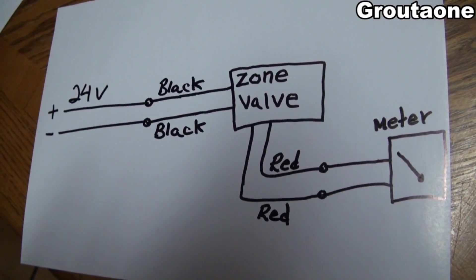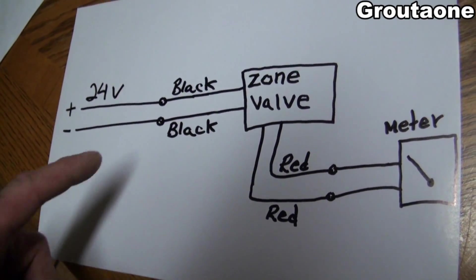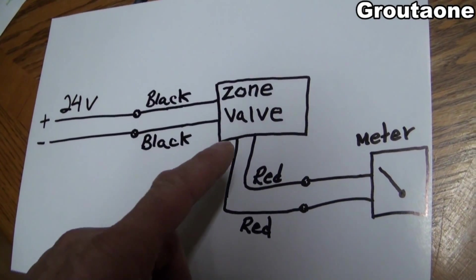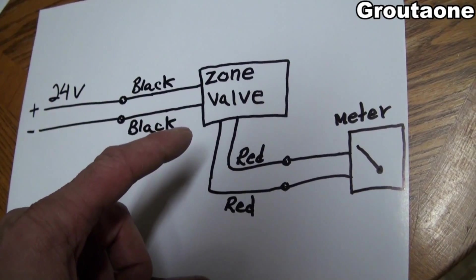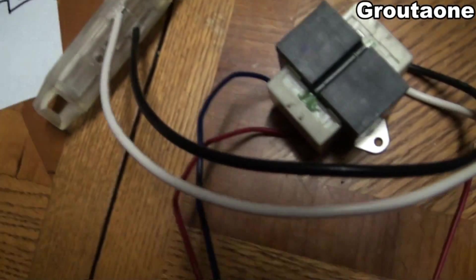I'm about to test and I drew up a quick diagram here showing you exactly what I'm doing. Here's my power source, the transformer, and into the zone valve, and then I take the reds and hook that up to my ohmmeter. I'm just about to test now.